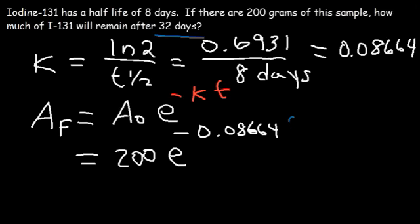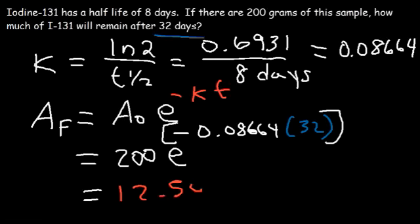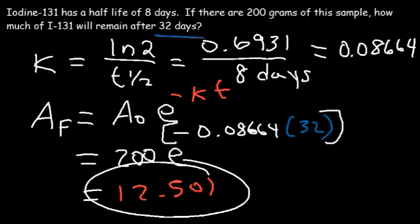E is the inverse of the natural log function. Type 200 times e raised to the negative 0.08664 times 32 — make sure you put the exponent in parentheses. You should get 12.5001. We know the exact answer is 12.5, so this is close enough. You can use the equation or the conceptual technique to find how much remains after 32 days.